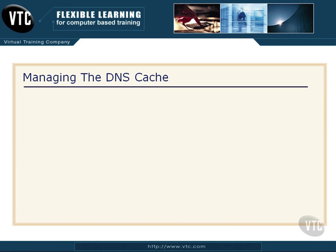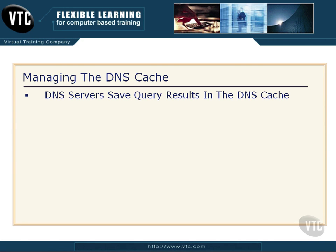Now let's talk about managing the DNS cache. You could be thinking, what are you talking about a DNS cache? Well, this is something that's been going on in the background. When a DNS server goes through all that process of sending out queries to the different DNS locations out there — the root hints and then the .com server and so forth — once it gets a good result back, it saves that in a little area of memory called the DNS cache.